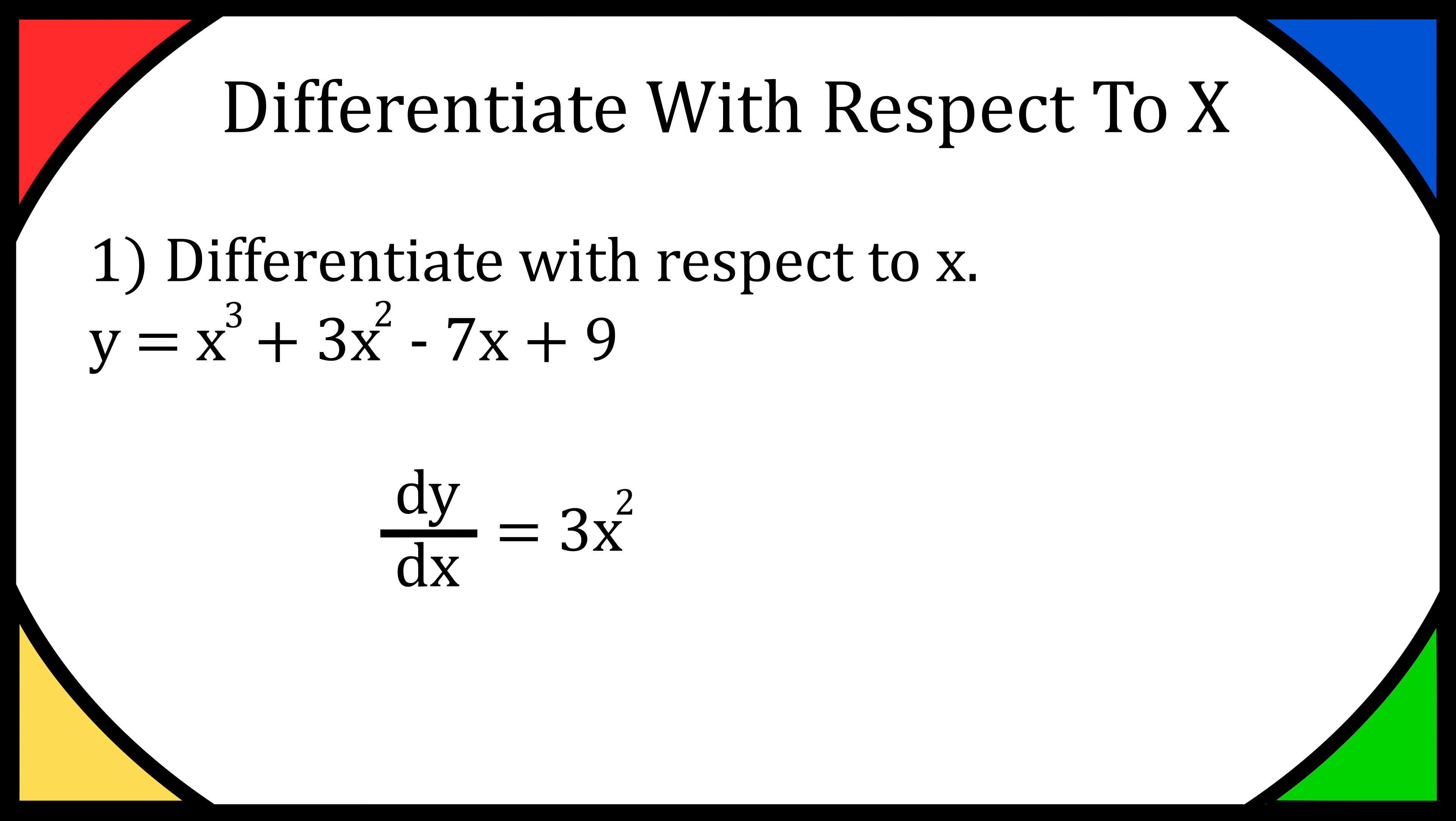You might want to pause and try the next term. For 3x², we do the same thing. Bring the power to the front—that's originally 3, then multiply it by 2 because we're multiplying the front number by the original power. So it's 3 × 2 = 6 at the front, and then we take one from the power. We'd have 6x², but taking one from the power leaves us with 6x.